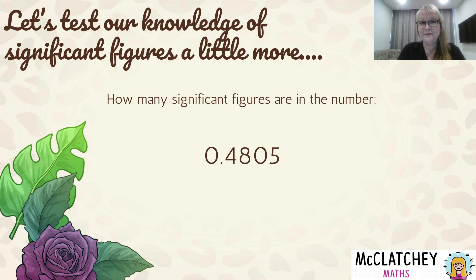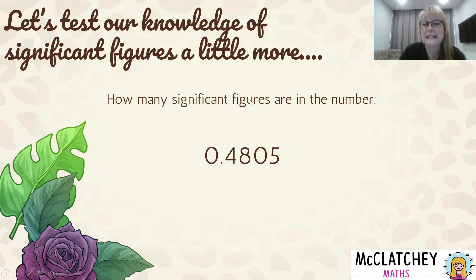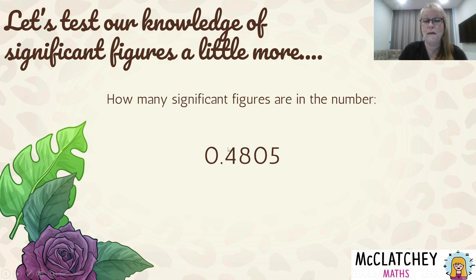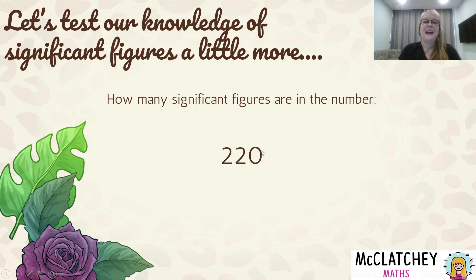How many significant figures are in this number? Leading zeros are not significant, but zeros between numbers are significant, so 1, 2, 3, 4 — four significant figures. Rounding to one significant figure, I look to the right and that tells me to round the four up to a five, so it rounds to 0.5. Rounding to two significant figures gives 0.48. Rounding to three significant figures gives 0.481.